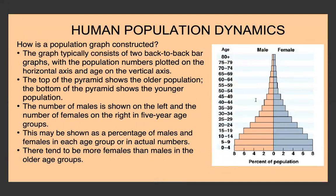A population pyramid is constructed as two back-to-back bar graphs — male and female — with population numbers on the horizontal axis and age on the vertical axis. The top of the pyramid shows the older population and the bottom the younger. Data is shown in five-year age groups, such as 0–4. It may be shown as percentage or actual numbers. Usually there are slightly more females than males in older age groups.